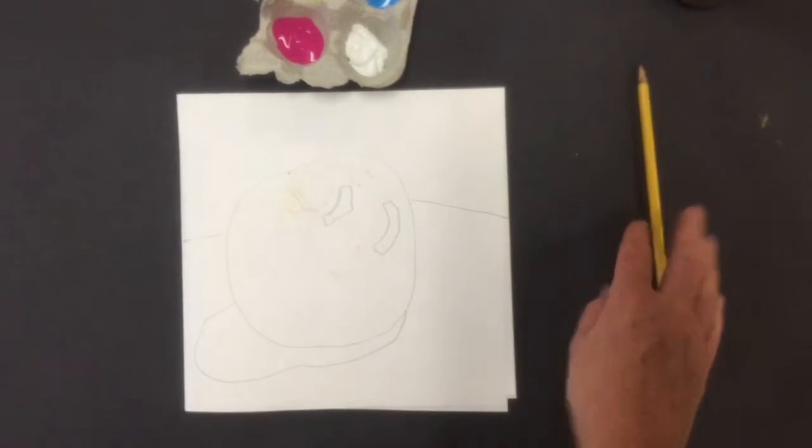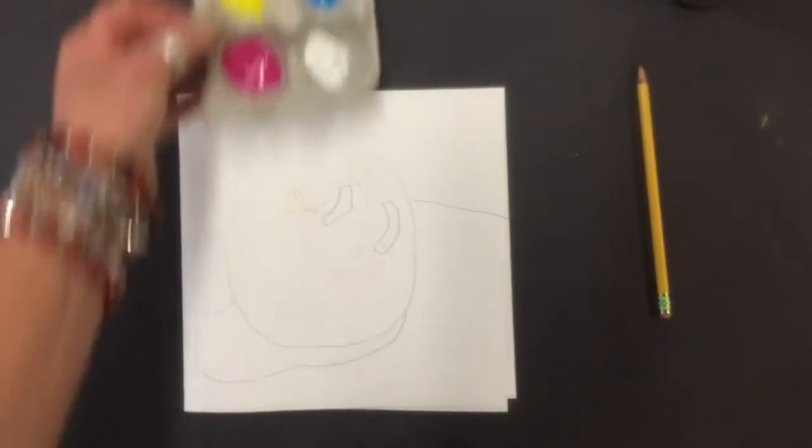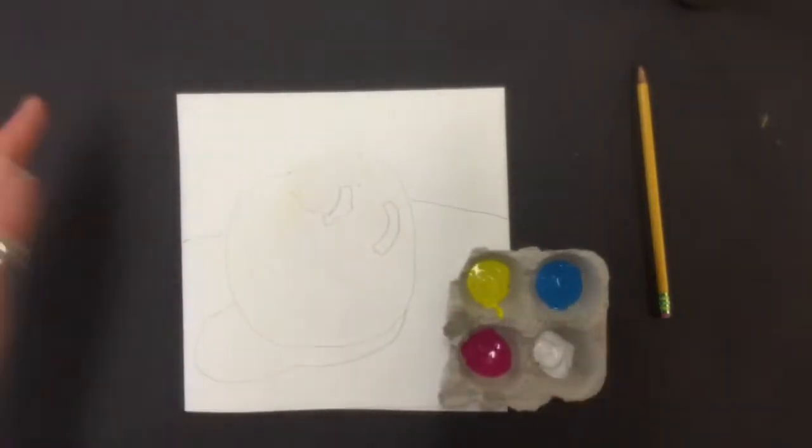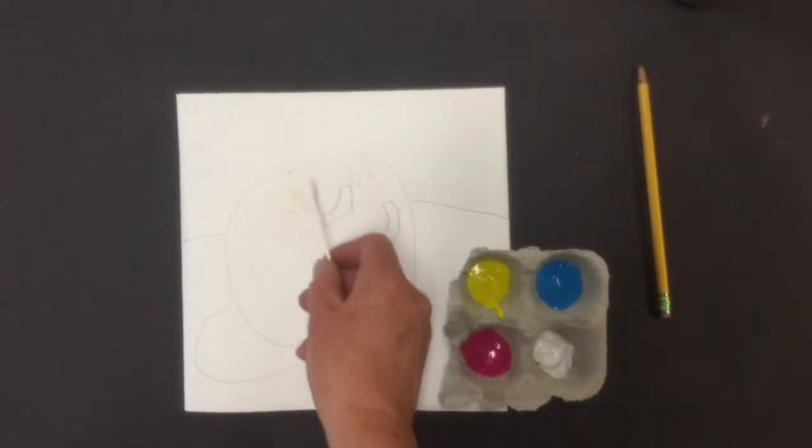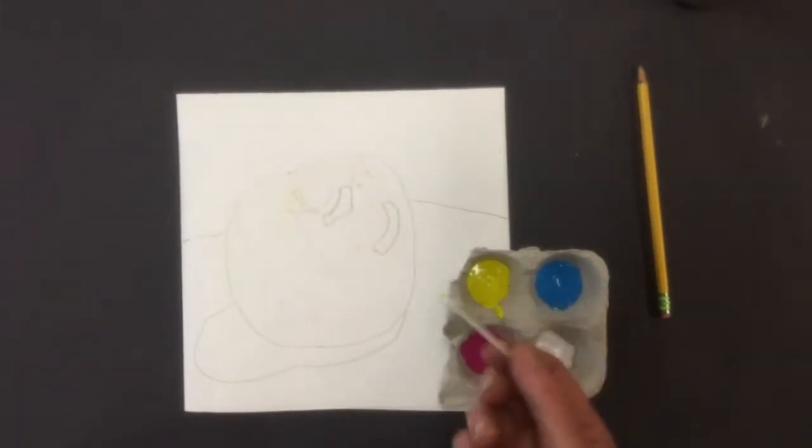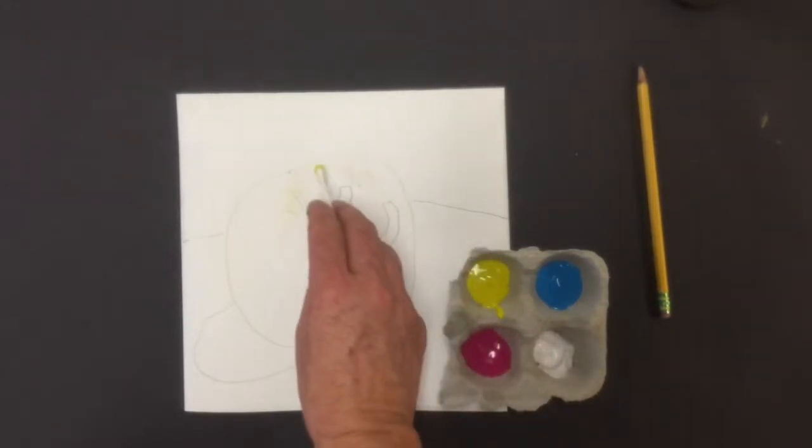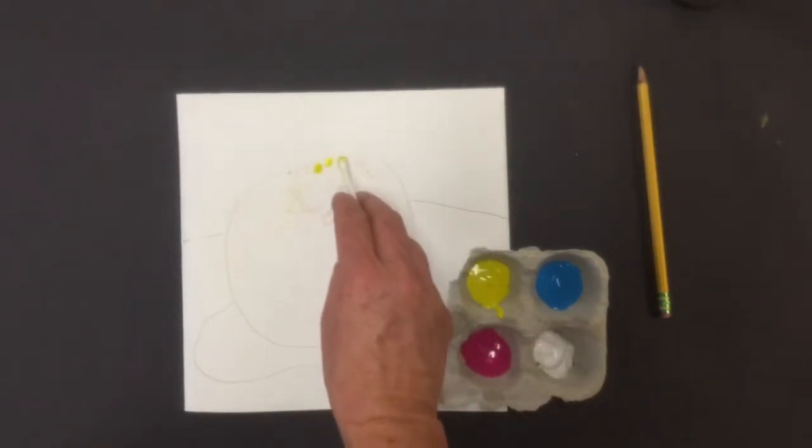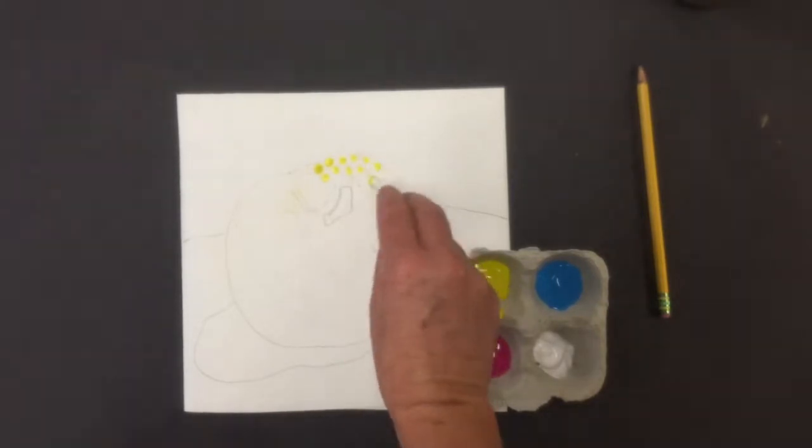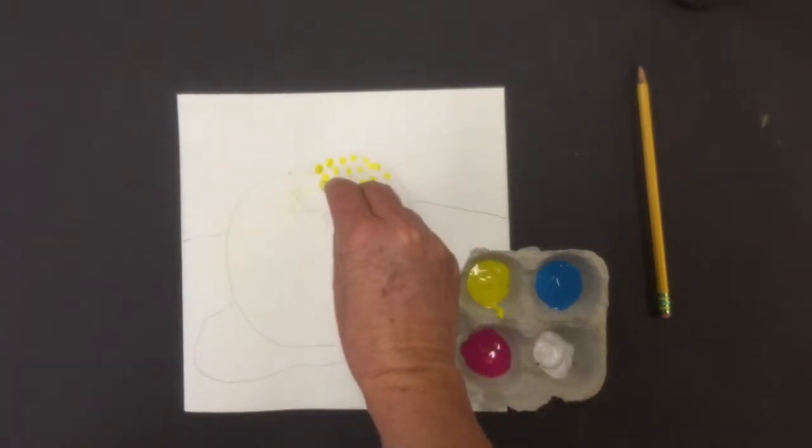Okay, now I'm ready to paint. So I am seeing my apple is kind of a yellowy orange color right up here. So I'm going to start. We're going to use a q-tip. And you only need one q-tip. You just dip it in the paint like this. And I'm going to start by putting some yellow dots over here, because this is where I see some yellow on my apple.